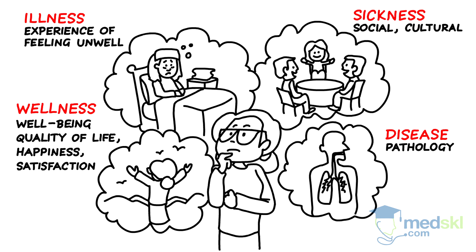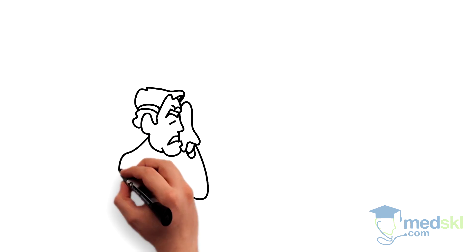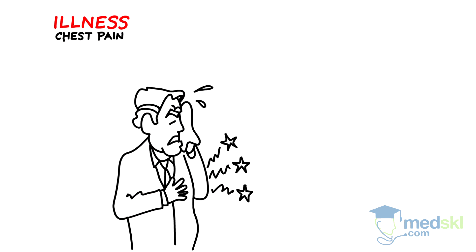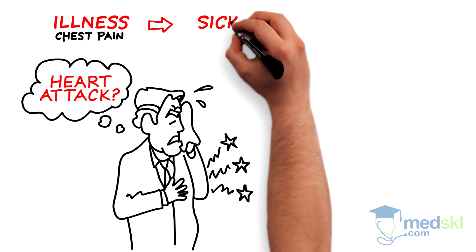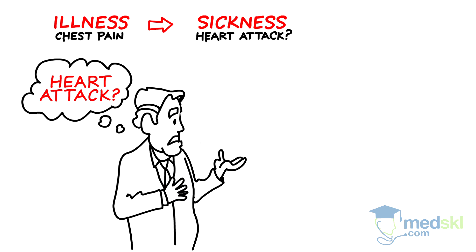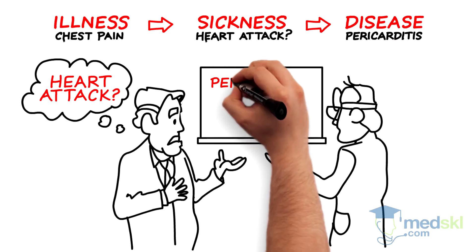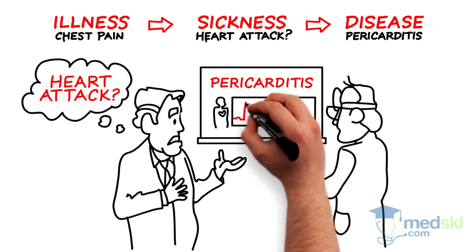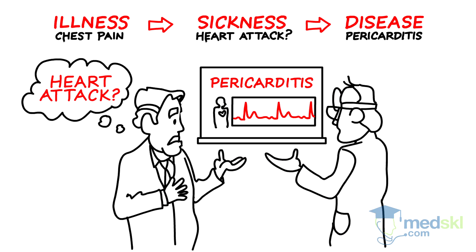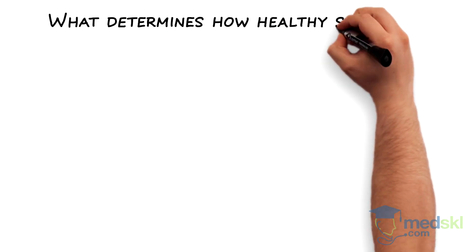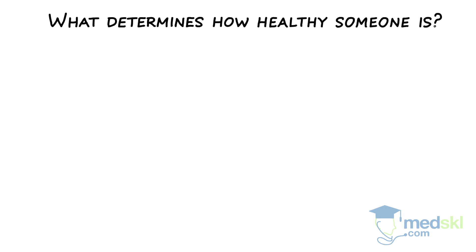For example, a person experiences chest pain — this is their illness. They fear a heart attack, a sickness, which causes them to seek help. The doctor explains to the patient that he has pericarditis — a disease. So what determines how healthy someone is? The determinants of health include genetics and biology.